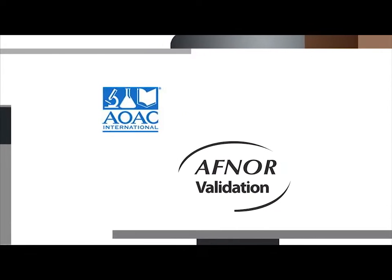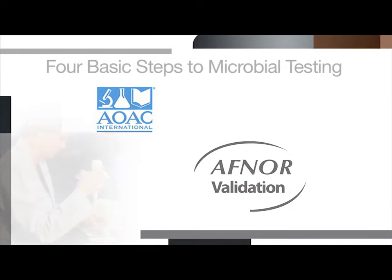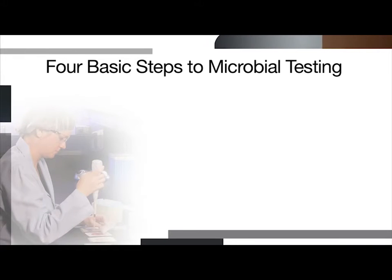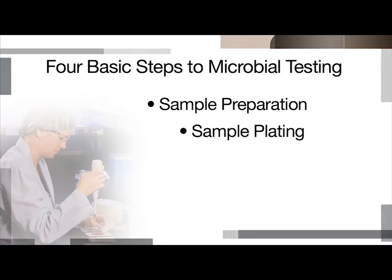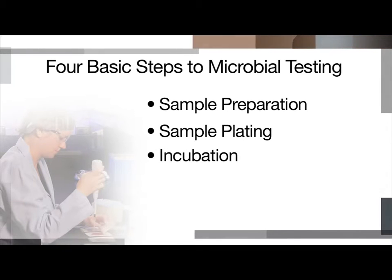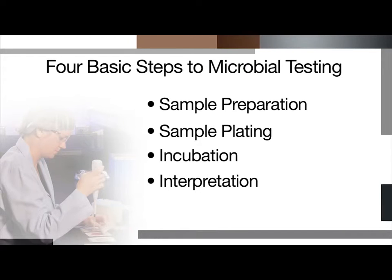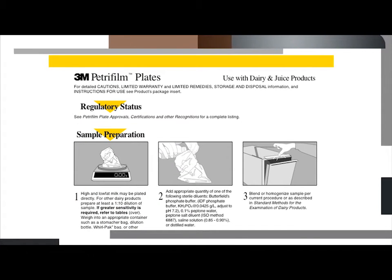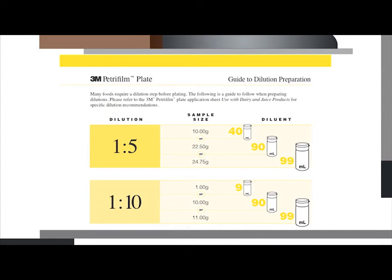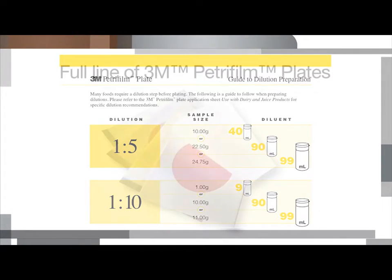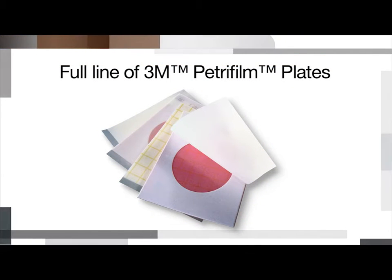There are four basic steps to product microbial testing: sample preparation, sample plating, incubation, and interpretation. Some products may require dilutions. Refer to the 3M dairy and juice application sheet or our guide to dilution preparation for recommended dilutions. When the samples are prepared and ready to be plated, choose from a full line of 3M Petrifilm plates.